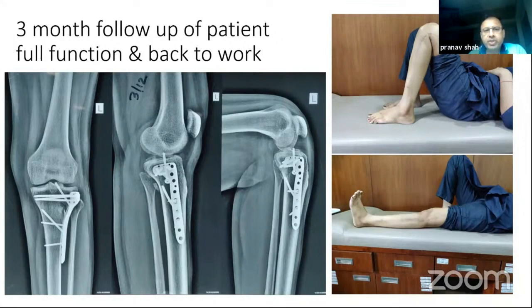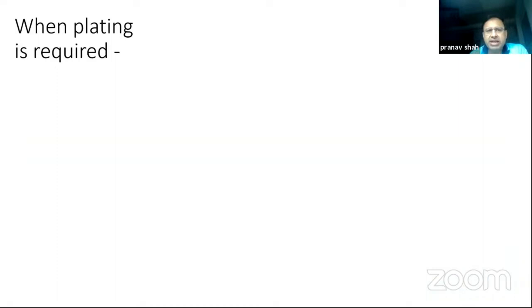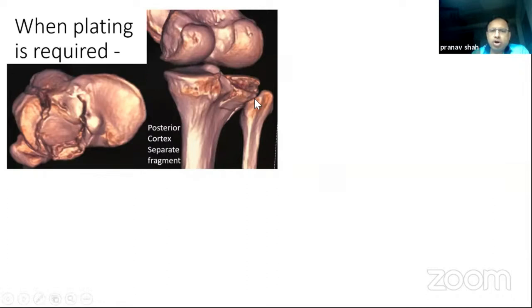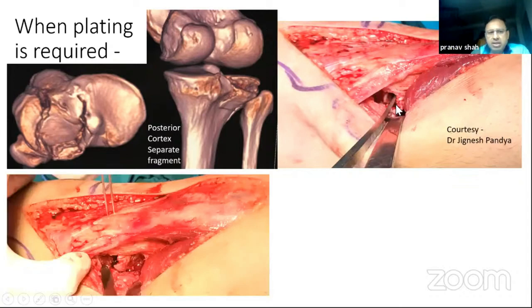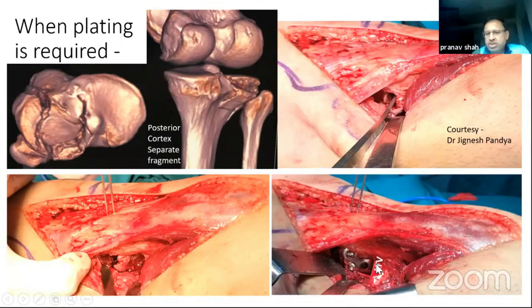Sometimes a posterolateral plate is required. This second case, shared with permission, shows a fragment where the posterior cortex is a separate piece that cannot be supported by reducing the condyle alone. The articular portion was reduced and stabilized with a K-wire, and the posterior cortical marginal fragment was supported with a small plate. Note that the neurovascular bundle is very close, so the plate must be really small and short — a long plate cannot be used in this direction.